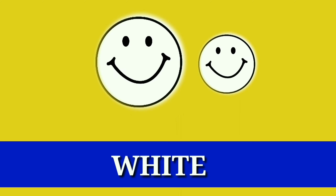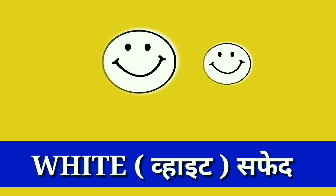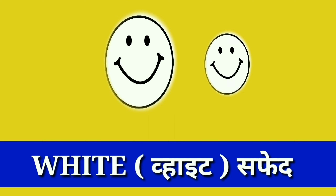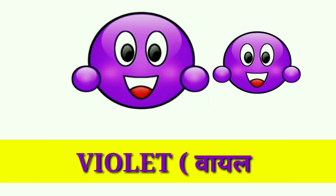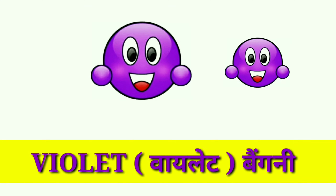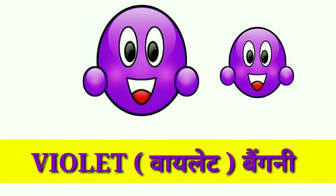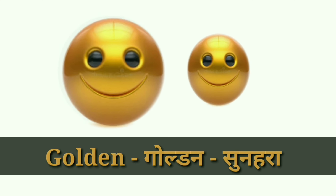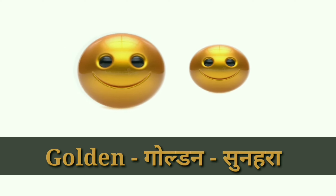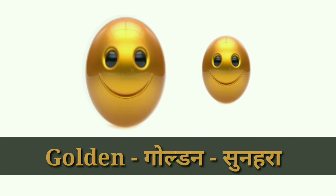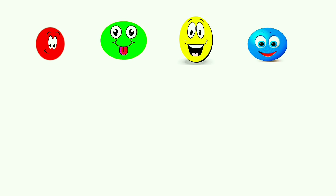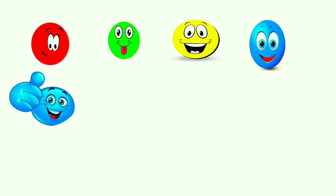White — white means safed, violet — violet means bangni, golden — golden means sunera. Repeat again: red, green, yellow, blue, sky blue.